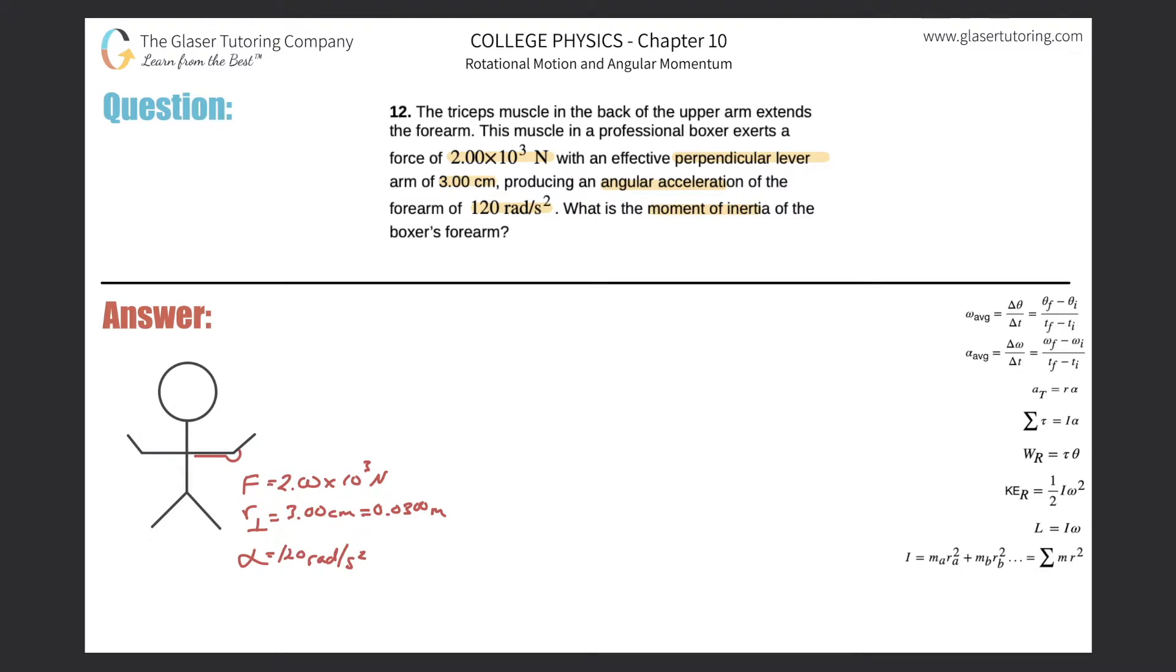All right, so here's our boxer. Here's the muscle in the back of the arm, it is then attached to the forearm and what we're trying to calculate. It tells us that this muscle will produce a force.